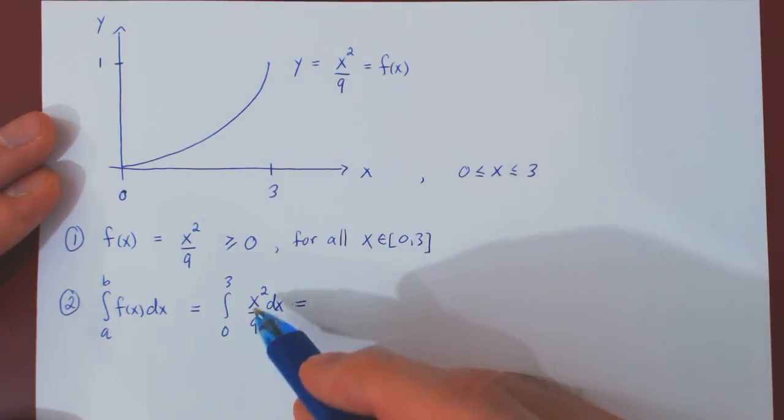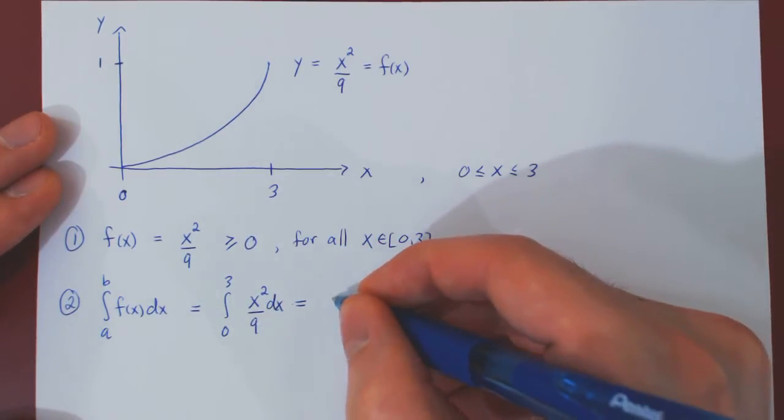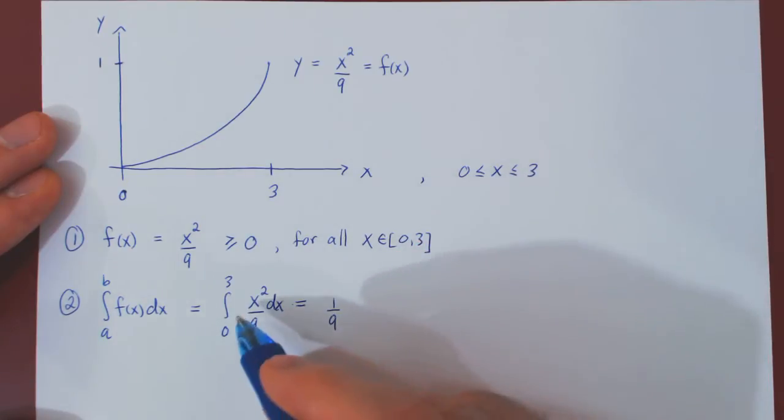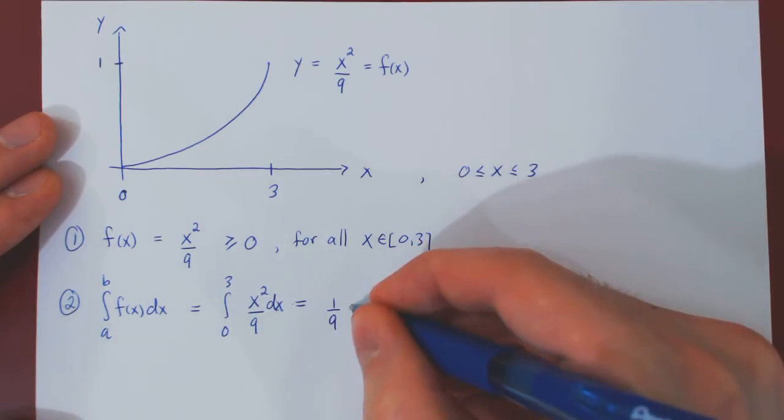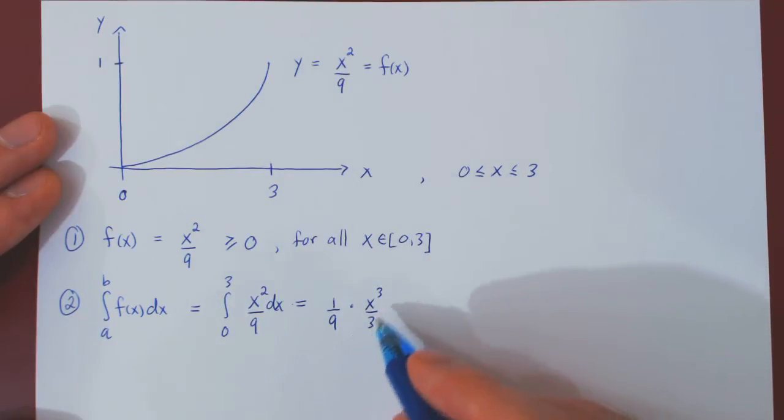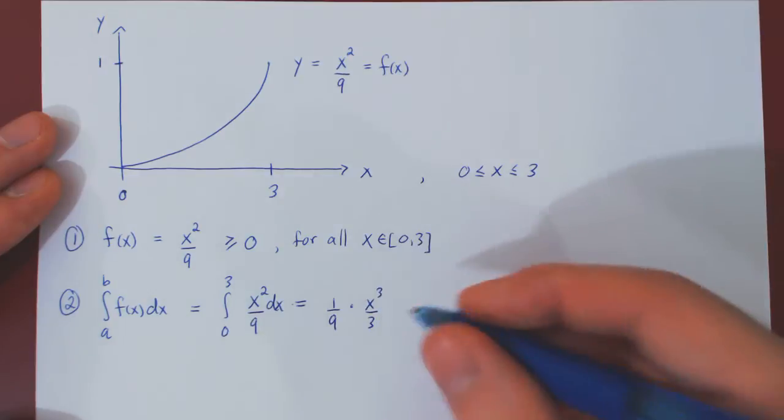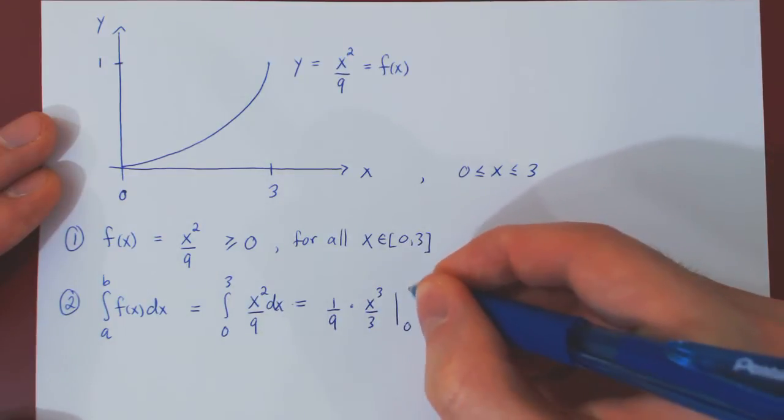Integrating this is rather trivial. 1 over 9 stays there as a constant multiple. Power rule in x squared gives us x cubed over 3. We now have the anti-derivative, and we must evaluate from 0 to 3.